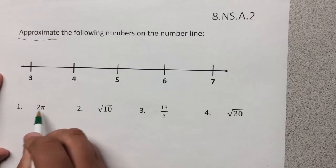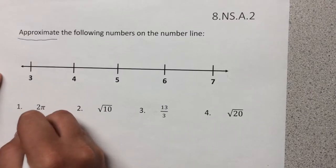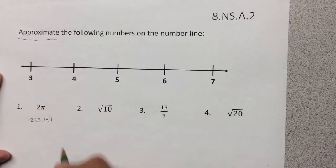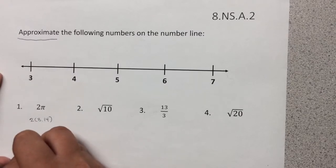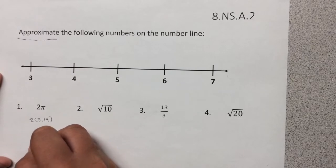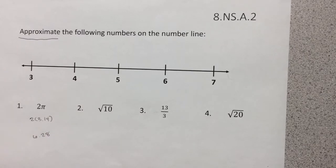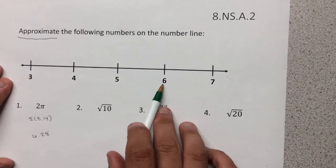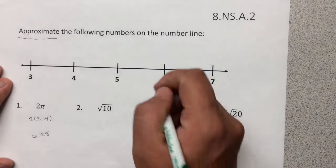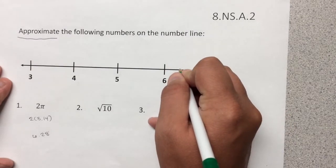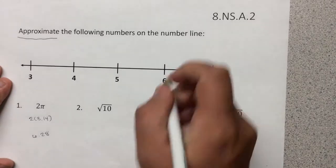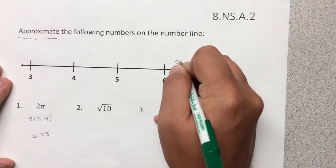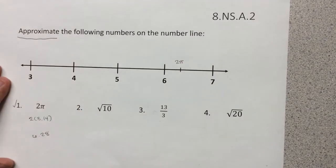For number one here, we have 2π. We know that π is about 3.14. So I know that 2 times 3 is 6, so we can take a guess and say this is about 6.28, which for that is pretty close. So I want to go 6.28 would be in between 6 and 7, and it's a little bit closer to 6, about a fourth of the way. So I can make a mark, and I can say that is where 2π is.